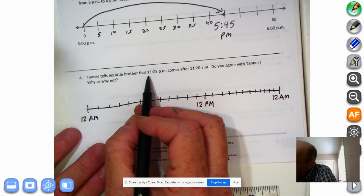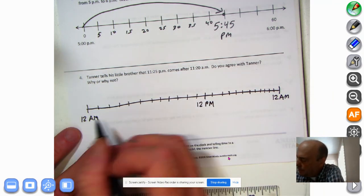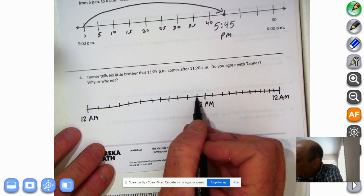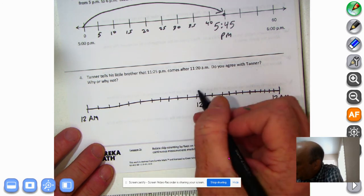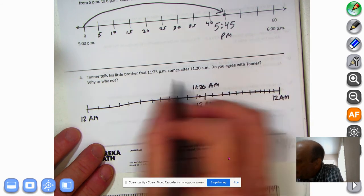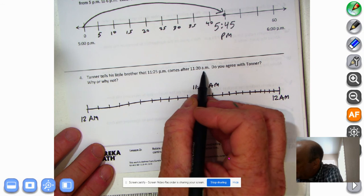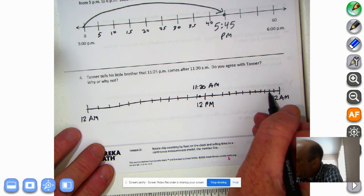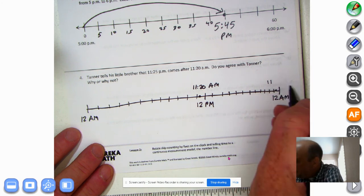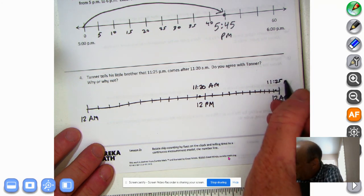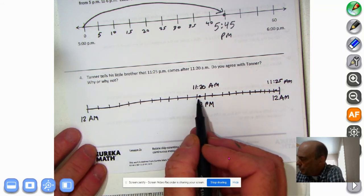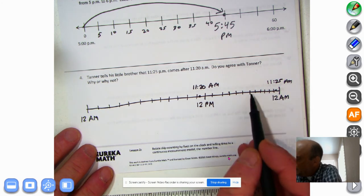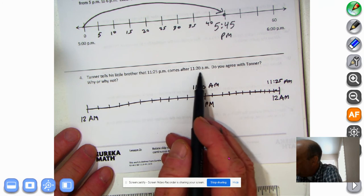So this character says that 11:25 PM comes after 11:20 AM. Let's take a look here. 1, 2, 3, 4, 5, 6, 7, 8, 9, 10, 11. This is 11:20 AM would be right around here. So we could say 11:20 AM. And then 11:25 comes after 11:20 AM. Well, we can go 1, 2, 3, 4, 5, 6, 7, 8, 9, 10, 11. And 11:25 PM would be right around here. So we have midnight, noon, 11:20 AM. And right before it becomes midnight again of the next day, it's 11:25 PM. So in this case, we could say that 11:25 PM comes after 11:20 AM.